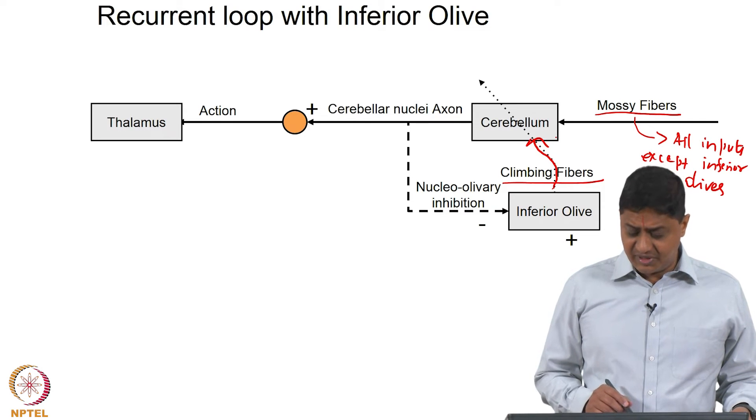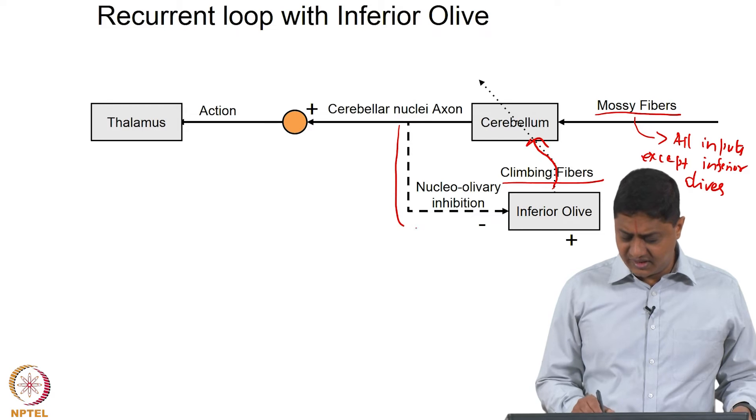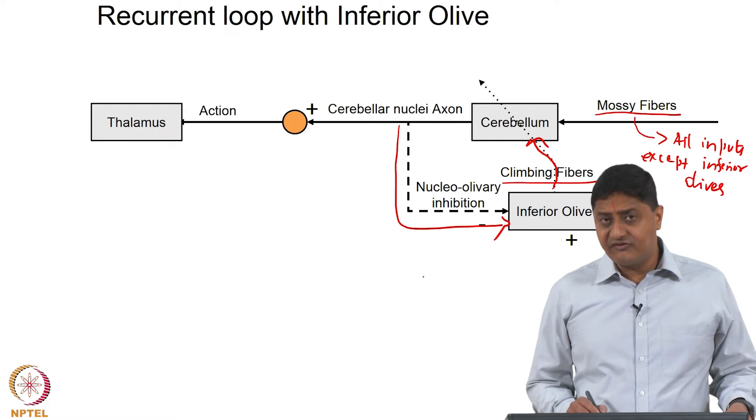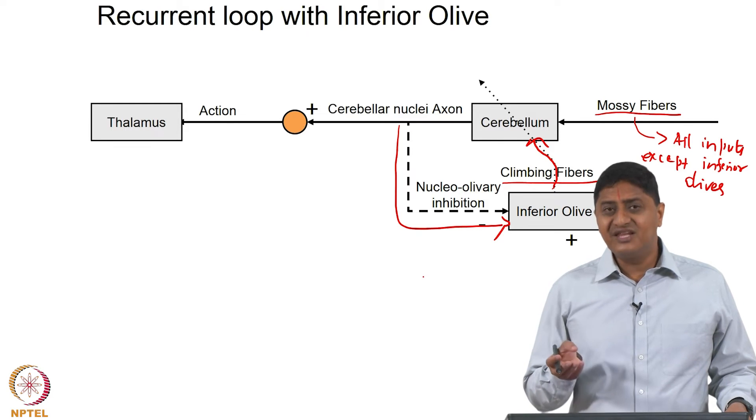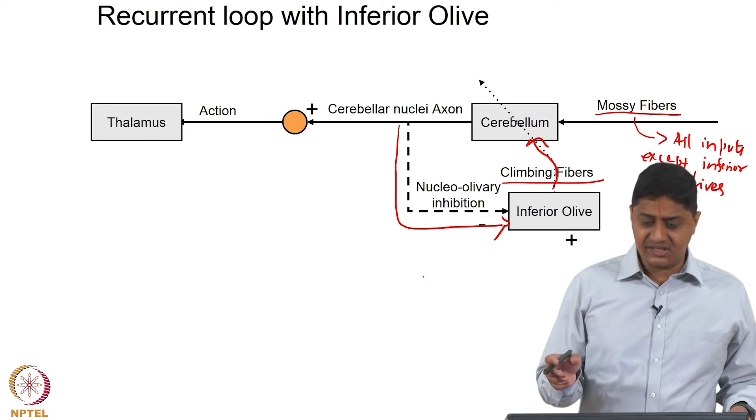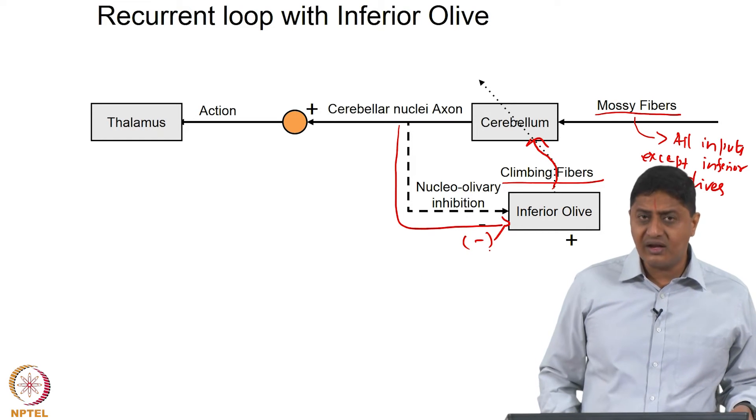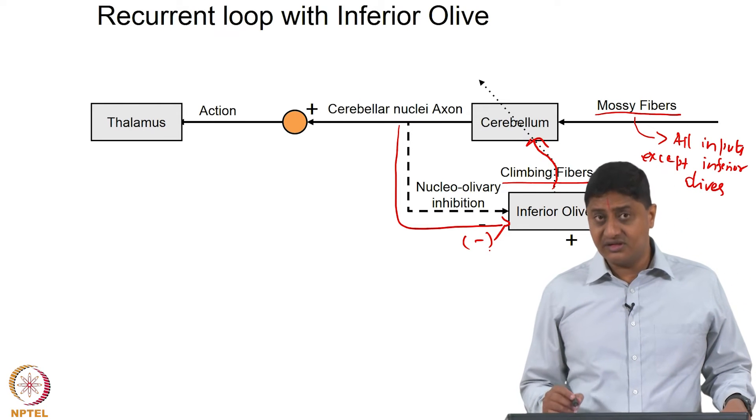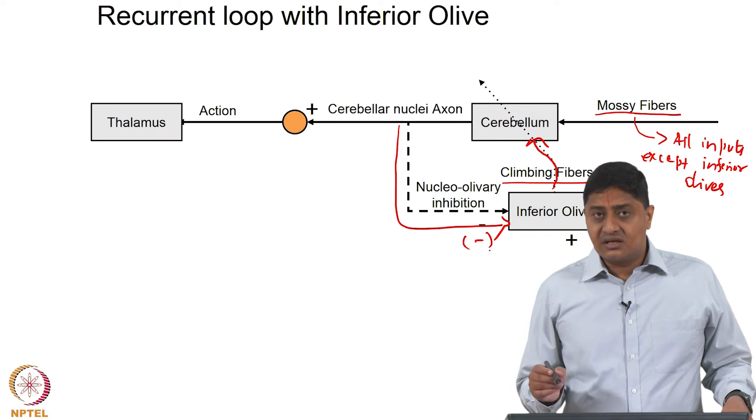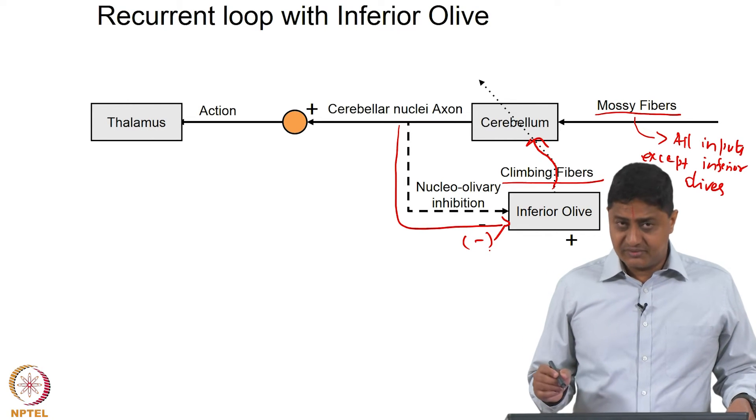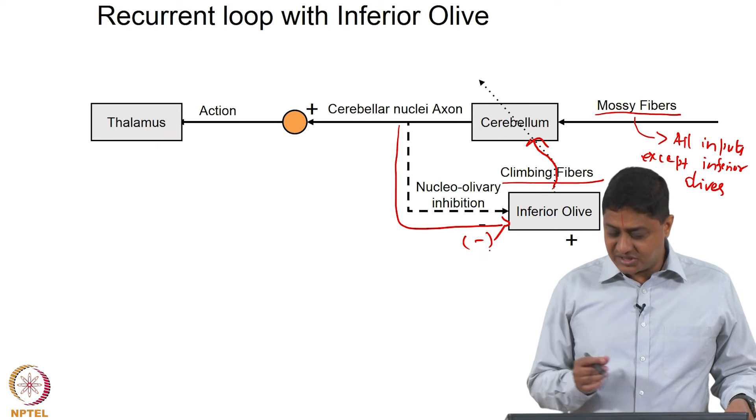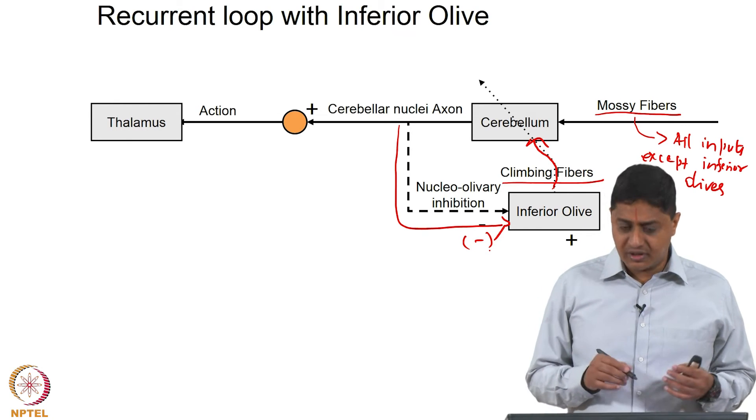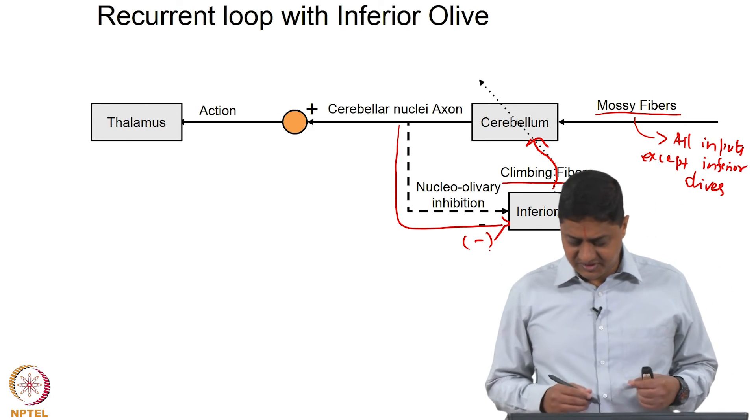That information is a very powerful source of information, the climbing fiber. And it turns out that the deep cerebellum nuclei can also negatively or inhibit the inferior olive. In other words, the cerebellum can regulate the inputs that it receives and what kind of information it is going to be receiving. Note also that inferior olive neurons are electrotonically coupled; there are gap junctions, information communication within inferior olive between some groups of cells is electrotonic or electrical through gap junctions.